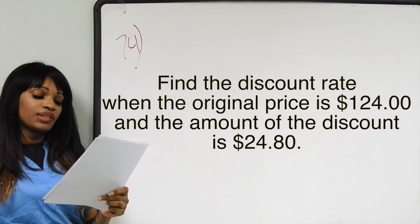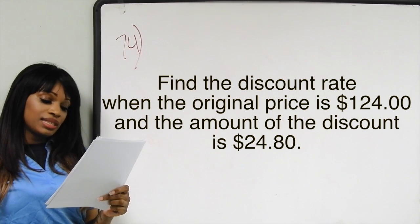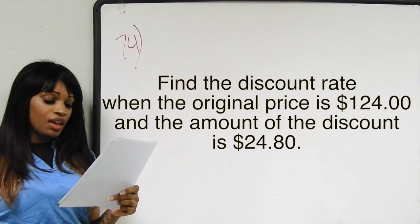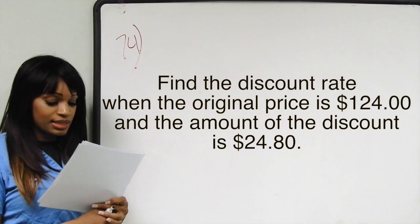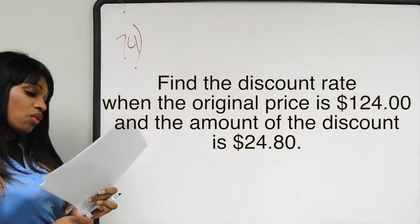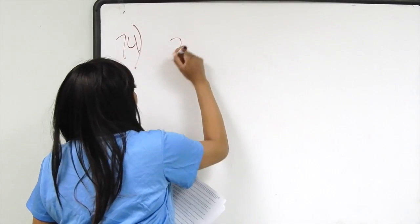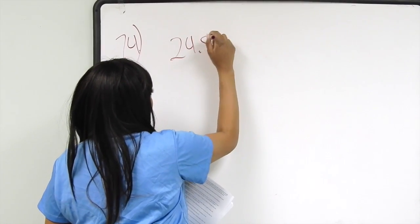Number 74 in the Math 086 final review states: find the discount rate when the original price is $124 and the amount of the discount is $24.80. What we know is that we have a discount which is $24.80.